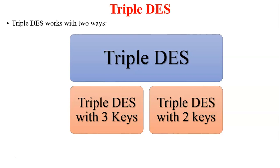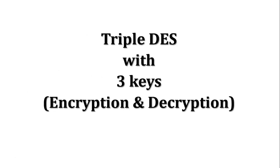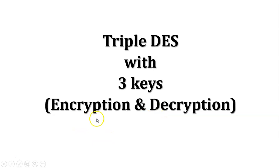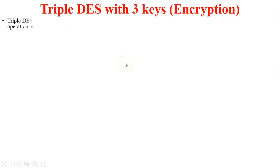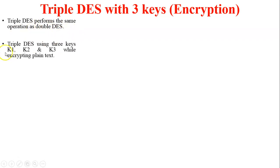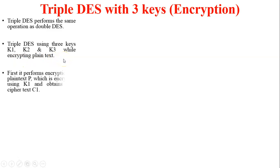First we start with Triple DES with three keys — encryption and decryption. Triple DES performs the same operation as Double DES. A Double DES video is available on my channel. Triple DES using three keys — K1, K2, and K3 — while encrypting the plain text. First, it performs encryption on plain text P. P means the original message sent by the sender to the receiver, which is encrypted using K1 to obtain the first ciphertext C1.